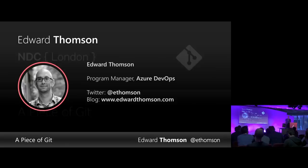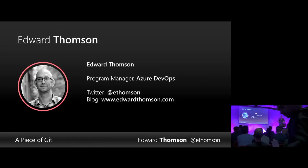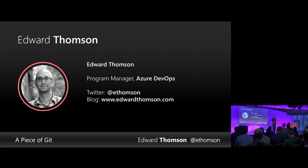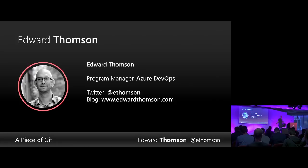Before I do, I want to introduce myself. I've never spoken at NDC London; I've spoken at other NDC conferences, so I suspect a lot of you don't know who I am. My name is Edward Thompson. I'm a program manager at Microsoft. I work on Azure DevOps — a suite of products for the software development lifecycle. We've got Azure Boards, Azure Repos storing Git or TFVC repositories, and Azure Pipelines to build and deploy code.